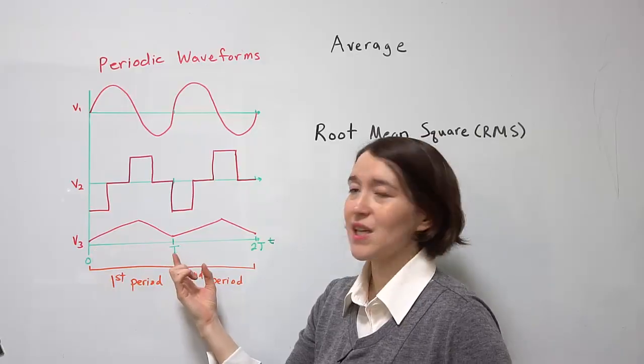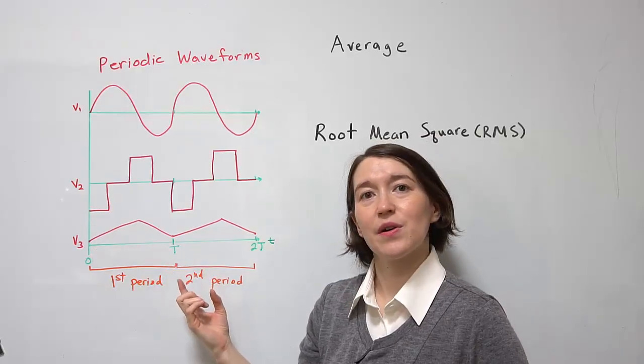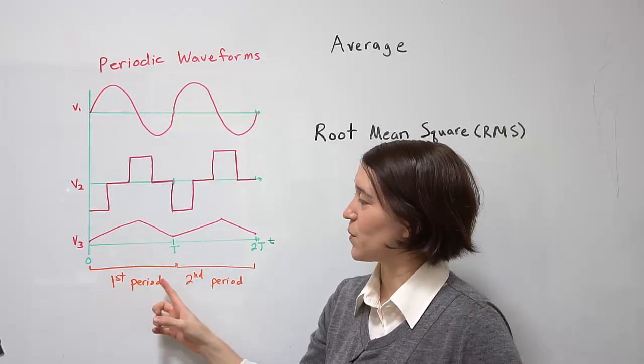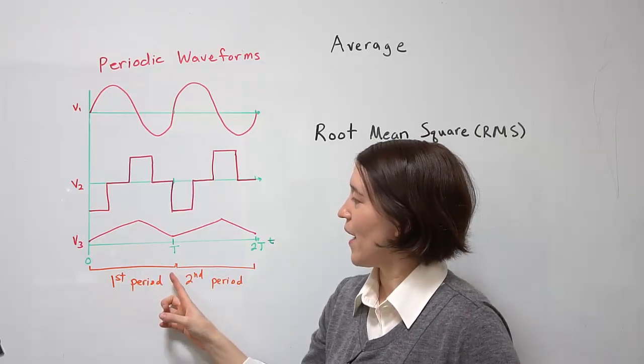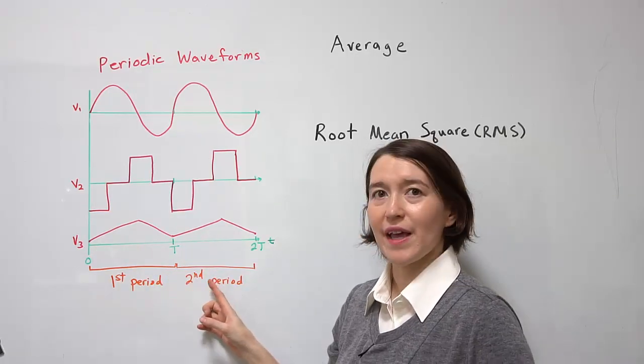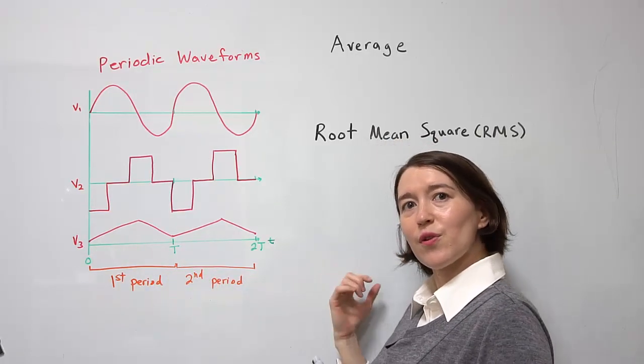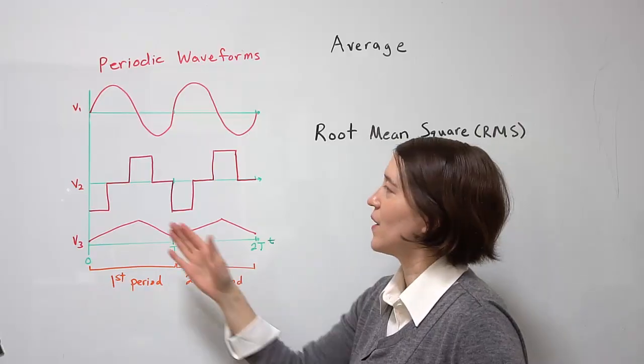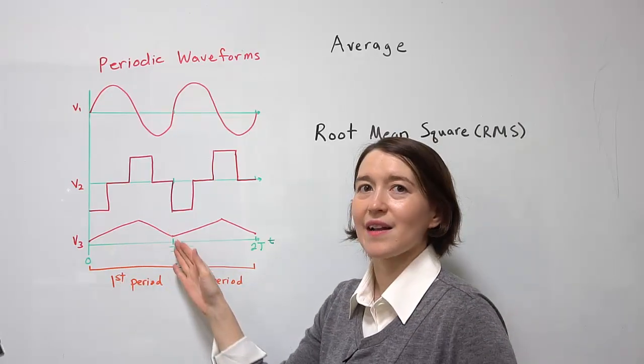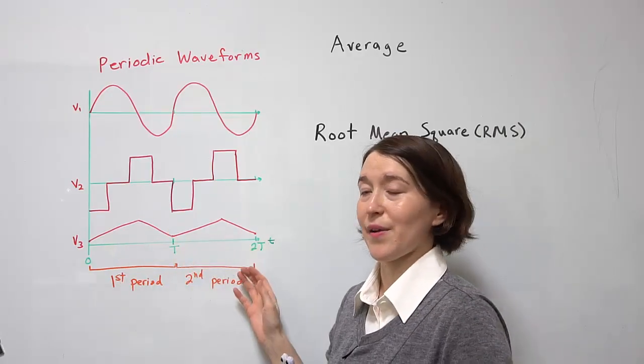So from zero to t, t is your period. You have the first period, and then the second, third, fourth, and so on — you're going to have the exact same pattern.